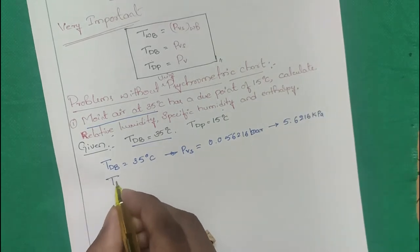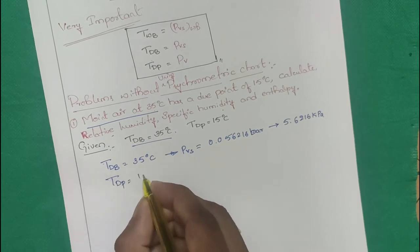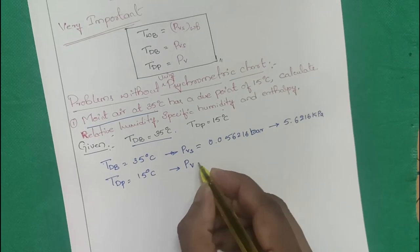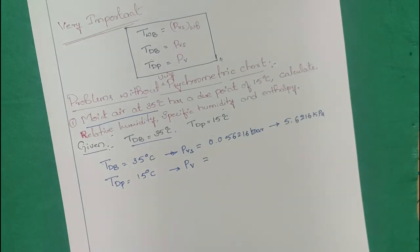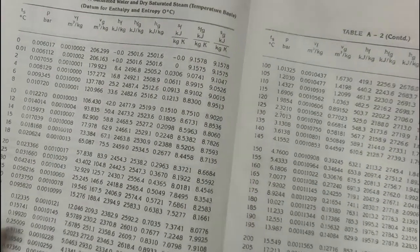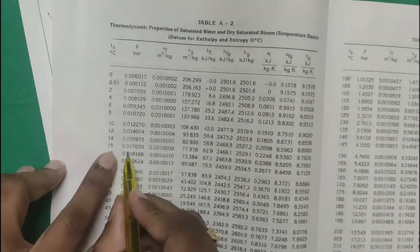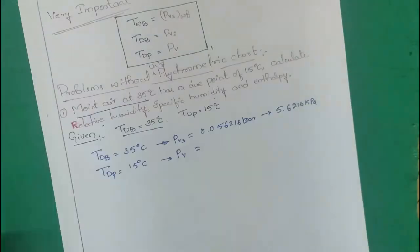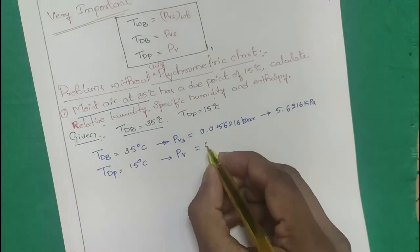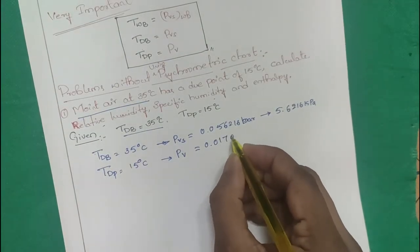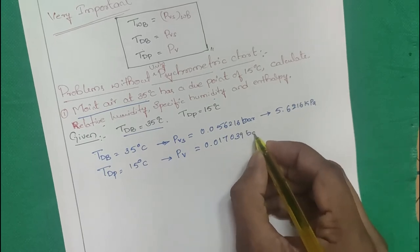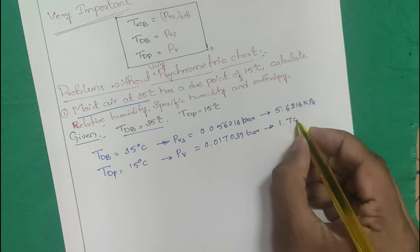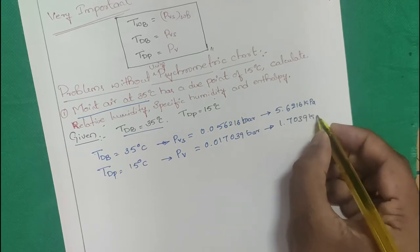Dew point = 15°C. For dew point temperature, we write PV directly. From the steam table at 15°C: PV = 0.017039 bar = 1.7039 kPa.